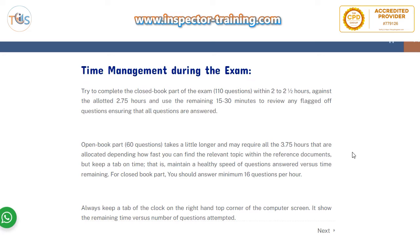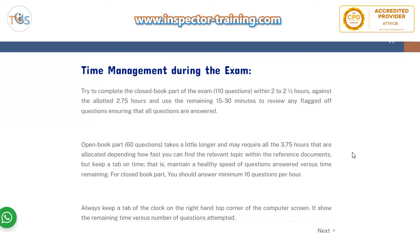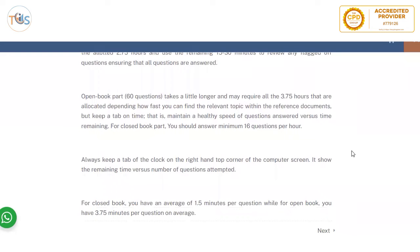Always allow 15 to 30 minutes before the end of the closed book section to make sure you have answered all questions, or go back to any flagged questions. For the open book section with 60 questions, it may take a little longer because you have to refer to the code to find information, formulas, charts, figures, and tables. That section is 3.75 hours, and each question should take less than four minutes — so you need a pace of 16 questions per hour.